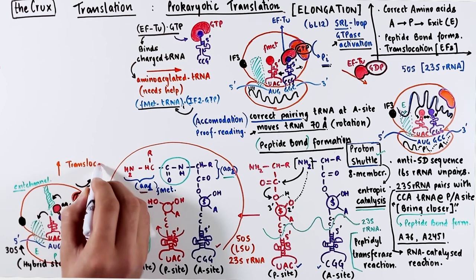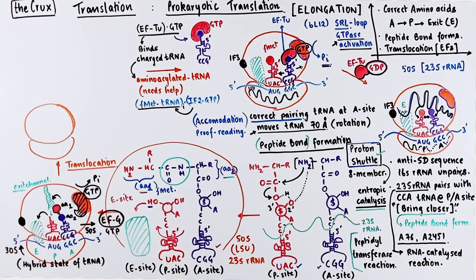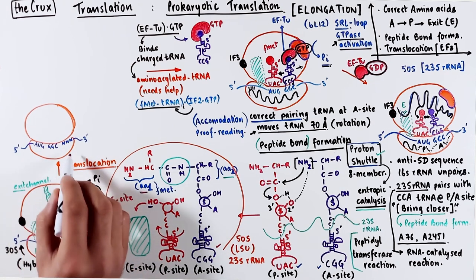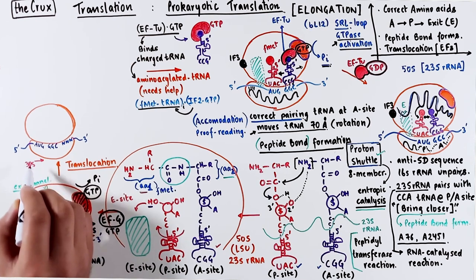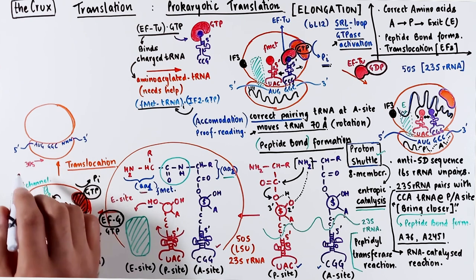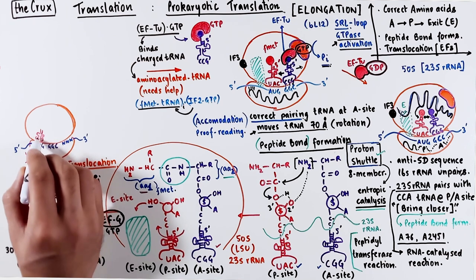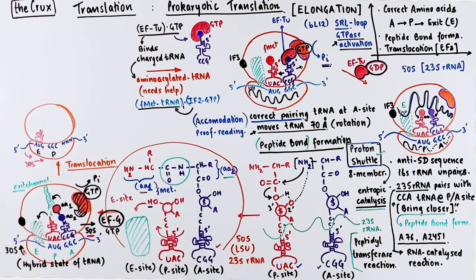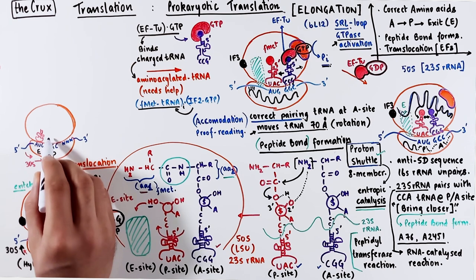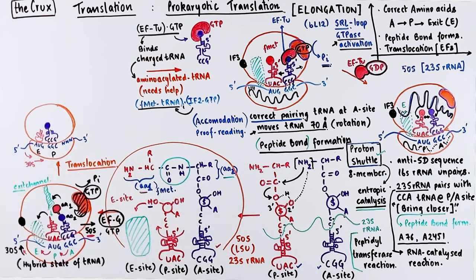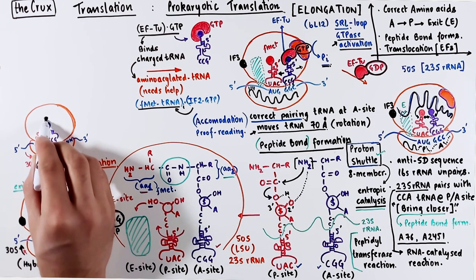When this GTP is hydrolyzed, the 70S complex transitions into the translocation stage. Because the 50S subunit moved forward, the 30S subunit also tries to move forward to catch up, rotating back into its original position. Because of this movement, the ribosome has moved by one codon, or three bases, such that the three bases at the P site are now moved to the E site — and therefore the tRNA which was at the P site has moved to the E site — and the codon from the A site moved to the P site, with the connected transfer RNA also moving to the P site.